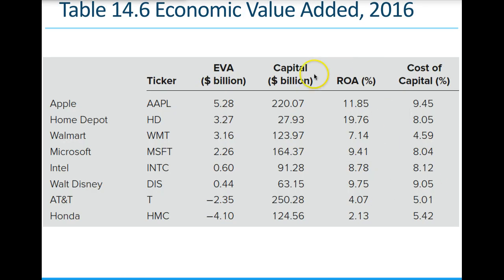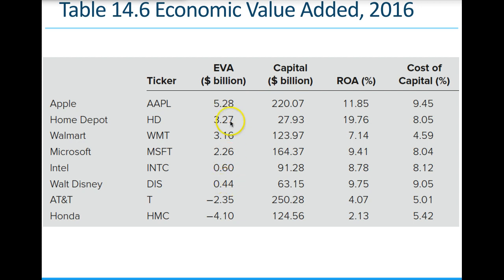Looking at economic value added across several companies — showing capital pool, return on assets, and cost of capital — in all cases except AT&T and Honda, the companies created more value than the cost of their capital. The return on assets shows who has the most profitable assets; Home Depot would have the most profitable assets in this comparison.